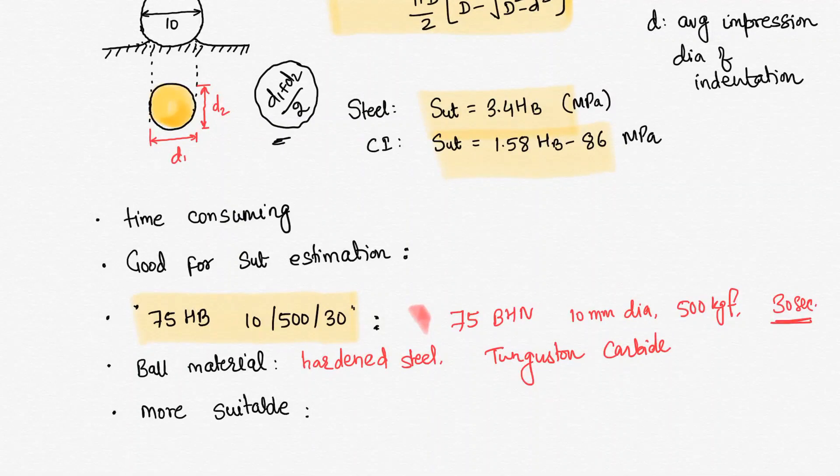And we usually say that this is more suitable test. Why is it more suitable? Because the depth of penetration is such that it will take care of the irregularities also. The depth of penetration is little high. We are using very heavy loads - 500 kg, 1000 kg, 1500 kg. That is why the depth is little more, the indentation is deeper.